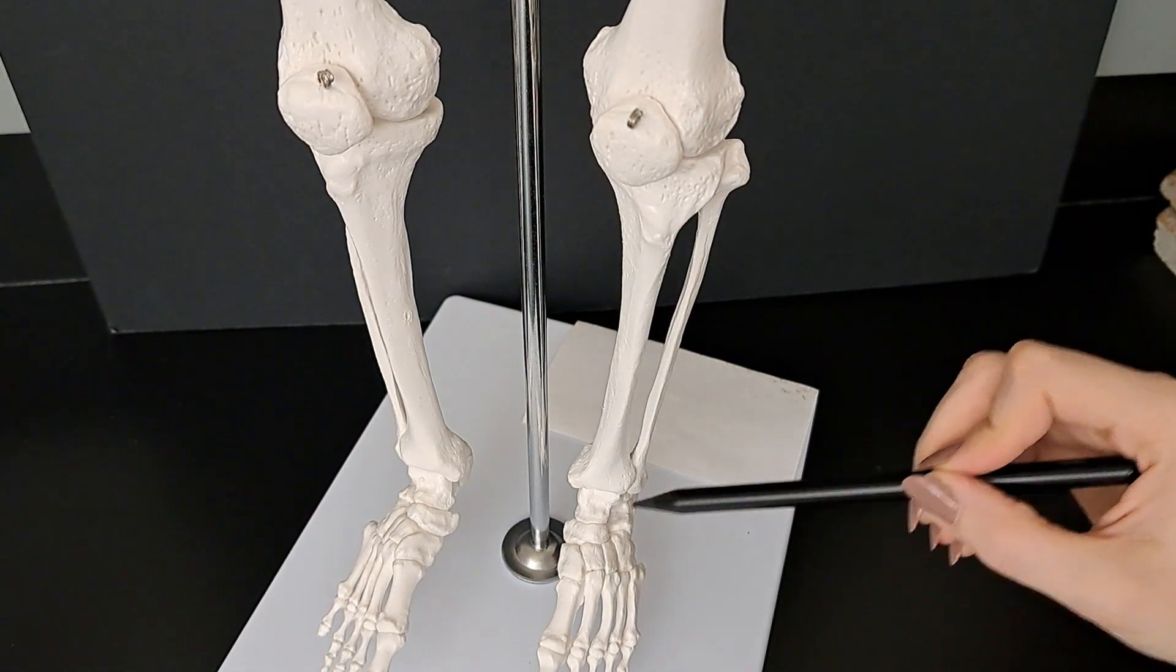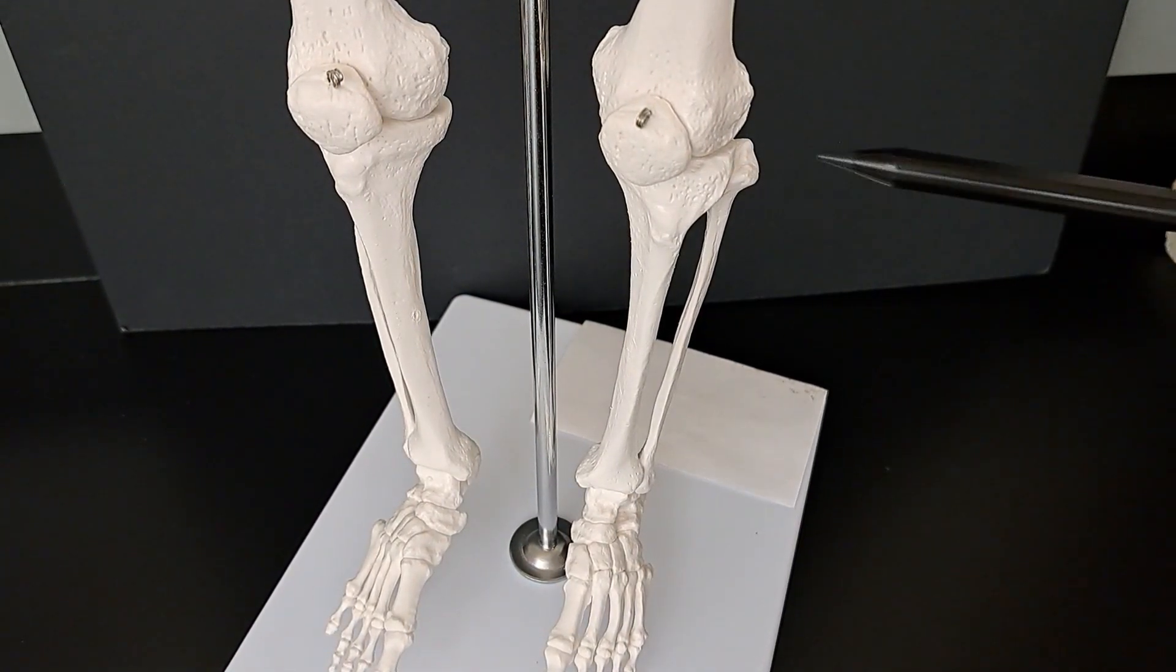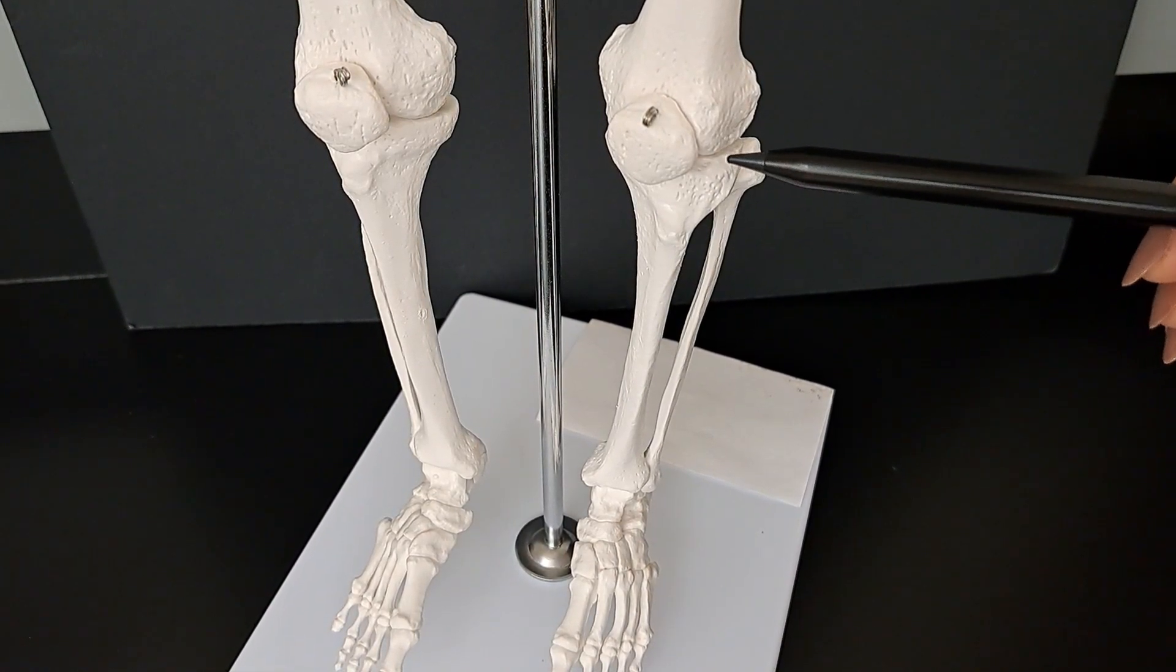So right here, this is the leg. We can see the two bones in the leg, the tibia and the fibula. This is the proximal end of the fibula, which articulates with the tibia only.